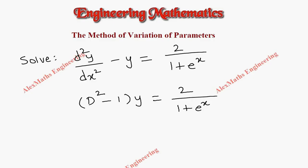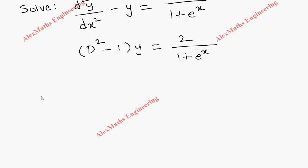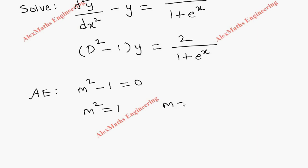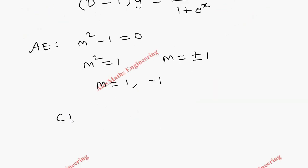We have to write the auxiliary equation, which is m² - 1 = 0. From this, m² = 1, so m = ±1. We get two values for m: one is 1 and the other is -1. Using this, we can write the complementary function as c1·e^(m1·x) + c2·e^(m2·x).